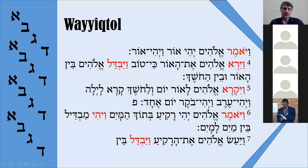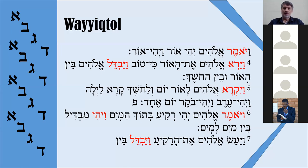For example, the word bana in Hebrew means 'to build'; in Yiqtol it becomes yivne, so bet is changed to vet. This is a common phenomenon in Hebrew. Badal means 'to divide,' and God divided — ben ha'or uven hachoshek — between the light and between the darkness. Vayiqra — kara means 'to call' or 'to name' — and God called the light yom, 'day,' and the darkness he called layla, 'night.' Vayhi erev, vayhi voqer, yom echad — 'and there was evening and there was morning, day one.'